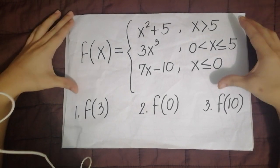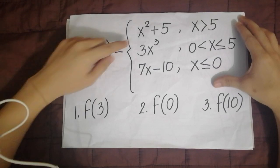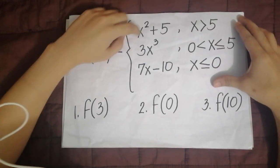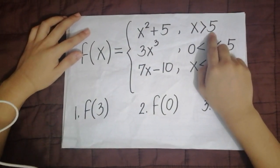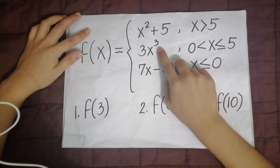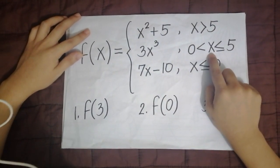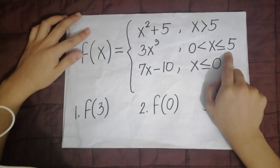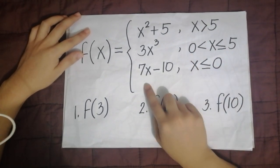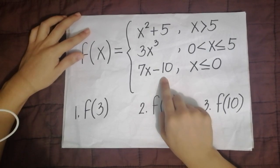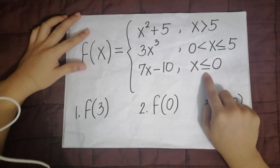So as you can see here, we have the equation f of x equals x squared plus 5 if x is greater than 5. We also have 3x cubed if x is less than or equal to 5 but greater than 0. And we also have 7x minus 10 if x is less than or equal to 0.